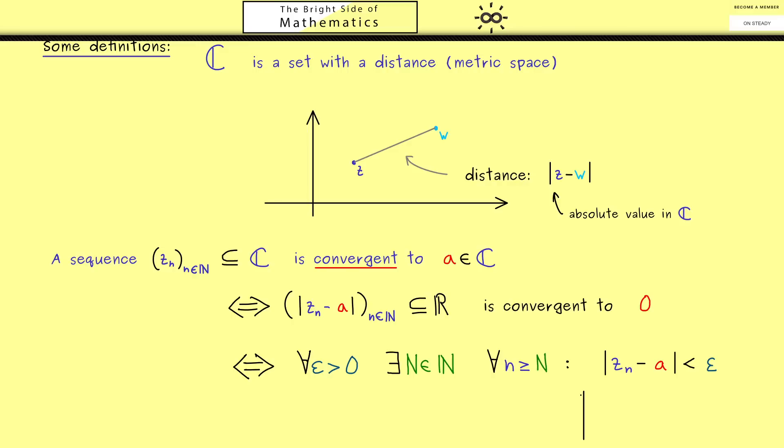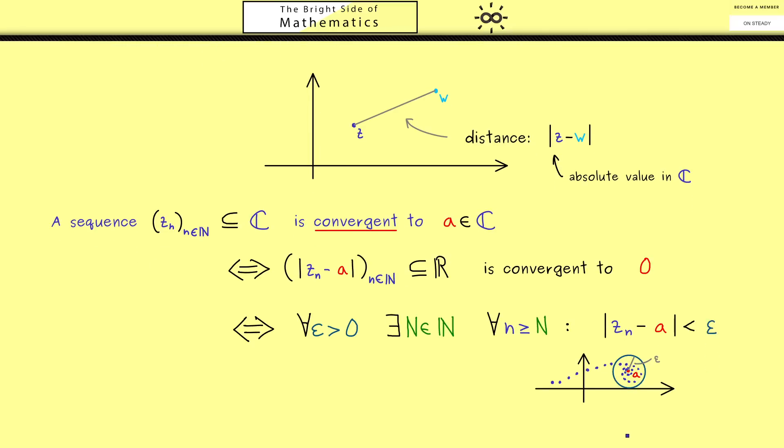Now we can visualize it in the complex plane. This formula with the distance less than epsilon means that we can draw a circle around a with radius epsilon. With this we get that eventually the sequence members z_n lie inside this circle. Only finitely many can lie outside.